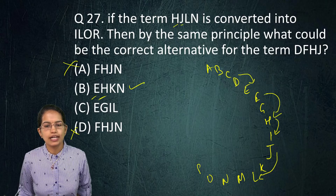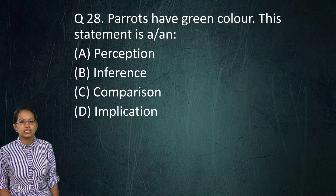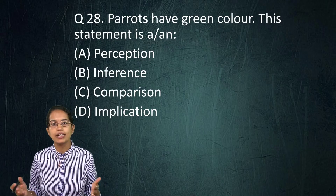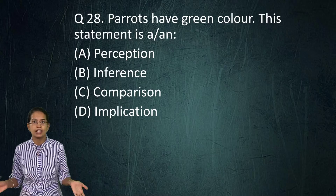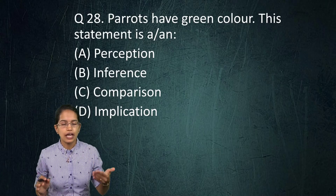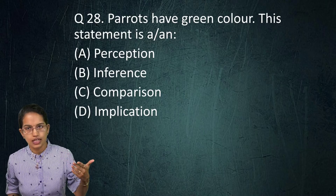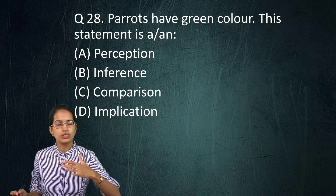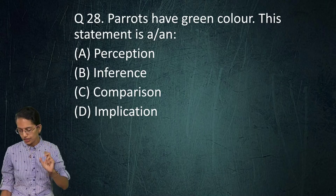The next question: 'Parrots have green color.' This is a direct statement which explains perception, or pratyaksh. Among the six pramans, pratyaksh is obtained through your senses. Here, 'parrot is green in color' is obtained through direct sense, so the answer is perception.